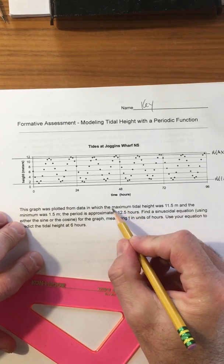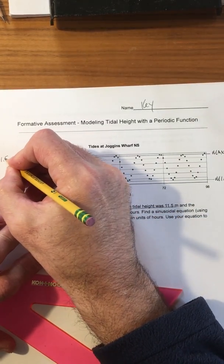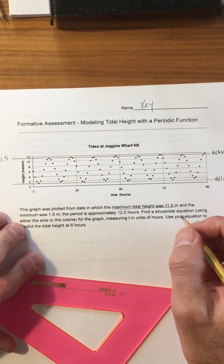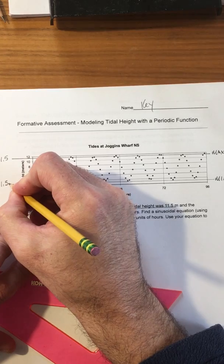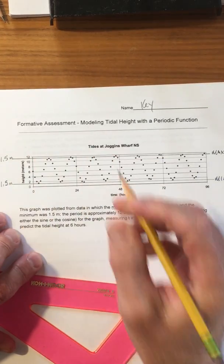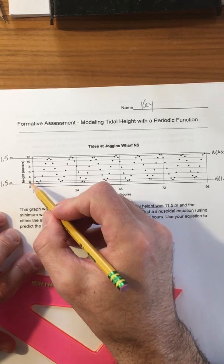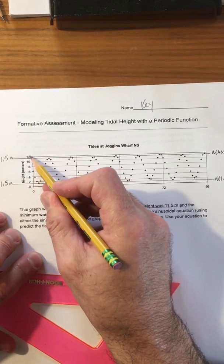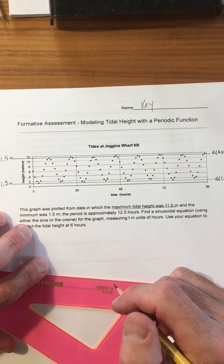Now one of the things that we know: the max tidal height was 11.5 meters and the minimum was 1.5 meters, so we don't actually have to try and read this scale which is very hard to read.